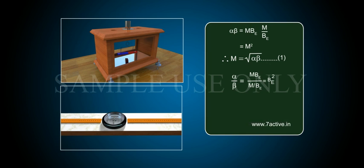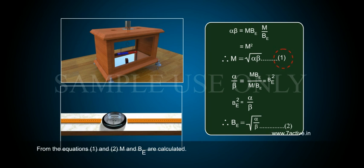And alpha by beta equals BE squared. Therefore, BE is equal to the square root of alpha by beta, equation 2. From equations 1 and 2, M and BE are calculated.